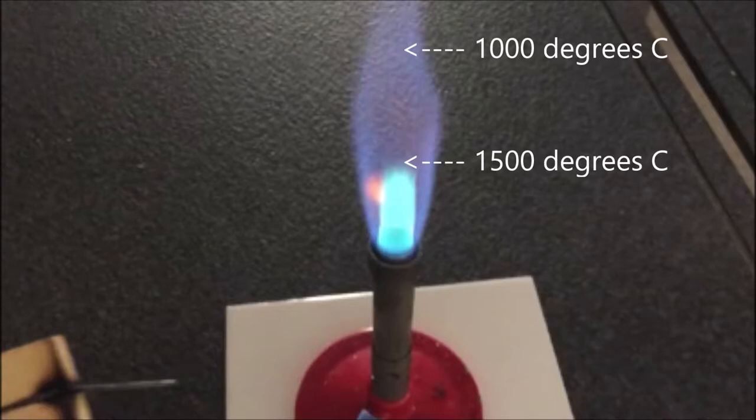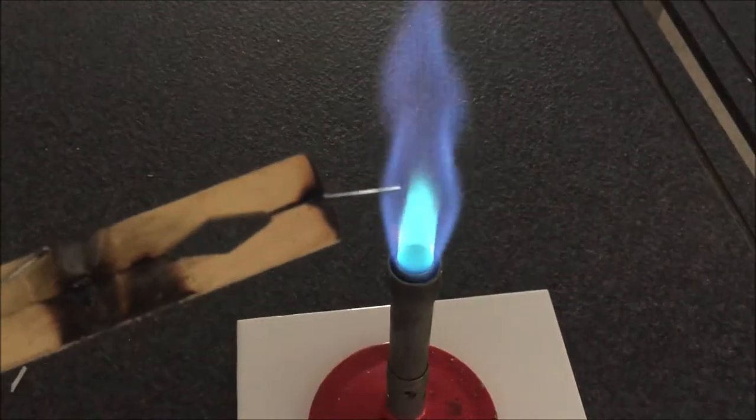In this demonstration I'm just going to heat a nail in a Bunsen burner. The blue tip of the flame is about 1500 degrees C, so when I put that nail in it